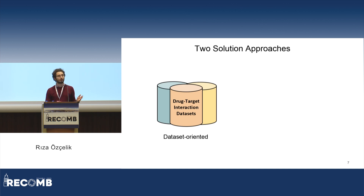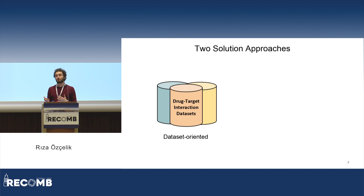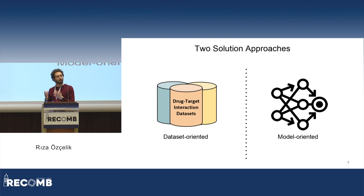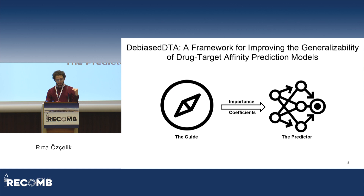There are two approaches to mitigate dataset biases in the literature. The first is dataset-oriented approaches, where researchers split datasets so that the test set and training set are significantly different from each other, hopefully capturing generalizability struggles. Unfortunately, those approaches risk degrading model performance because they discard data that is causing a problem — and data is very scarce in this domain. The second approach, which we also explore, is the model-oriented approach: instead of meddling with datasets, we focus on the model training framework to make the best out of the data we have.